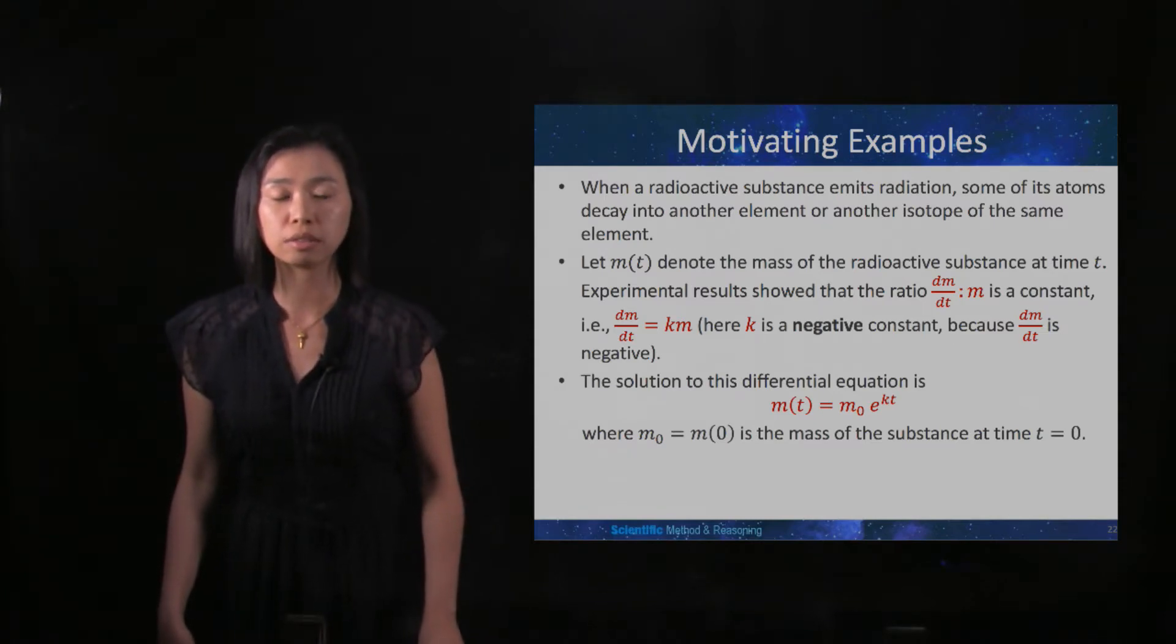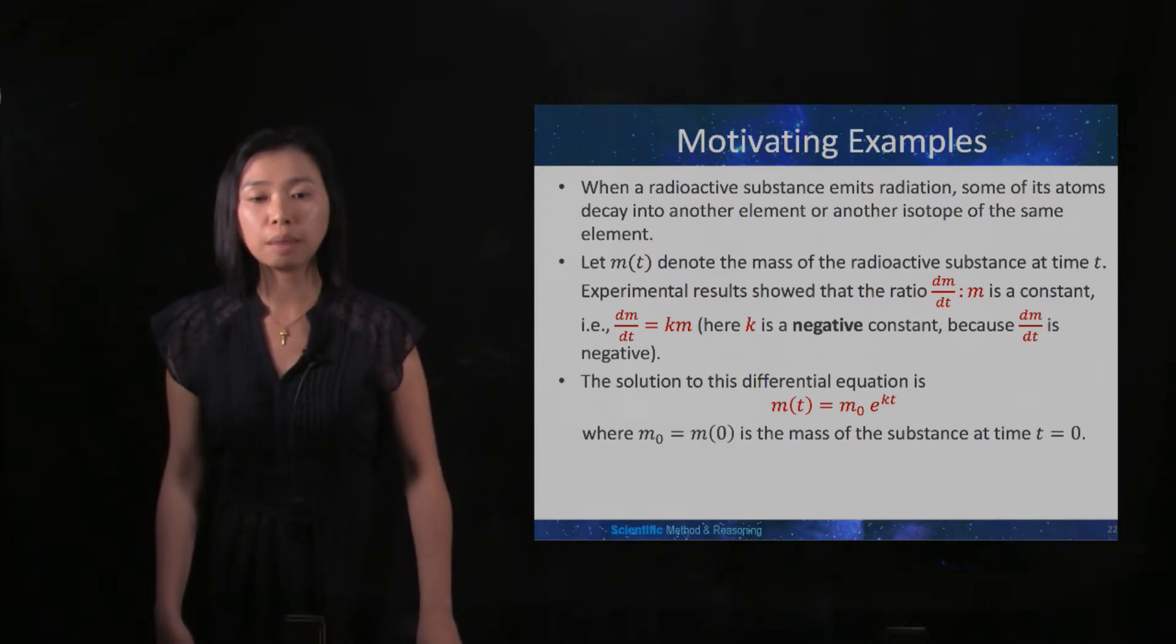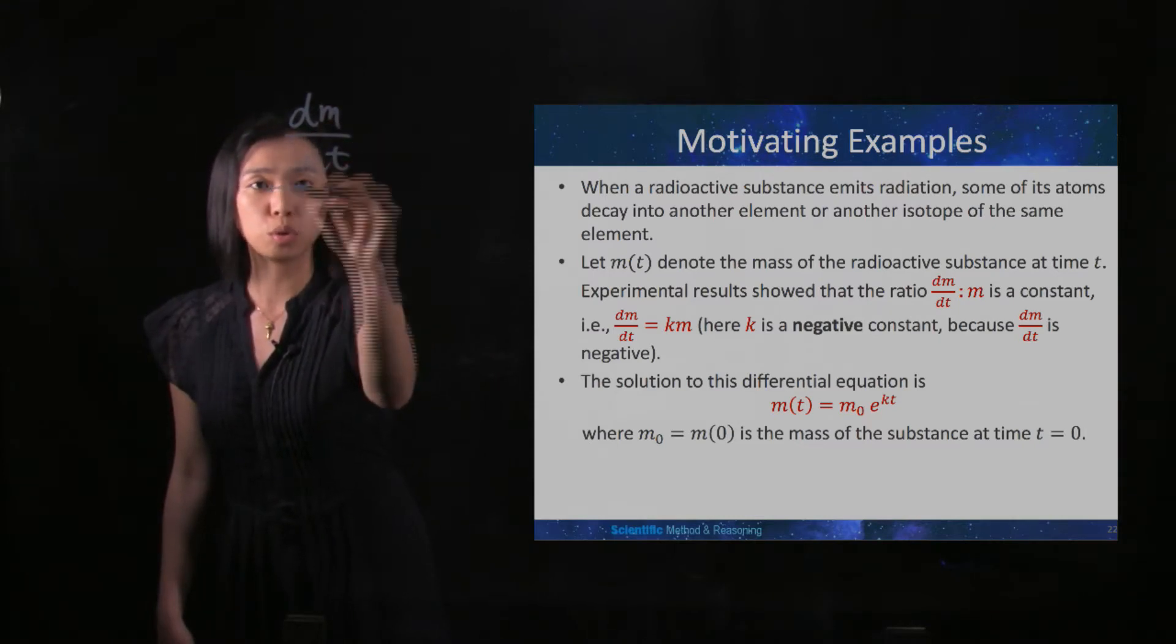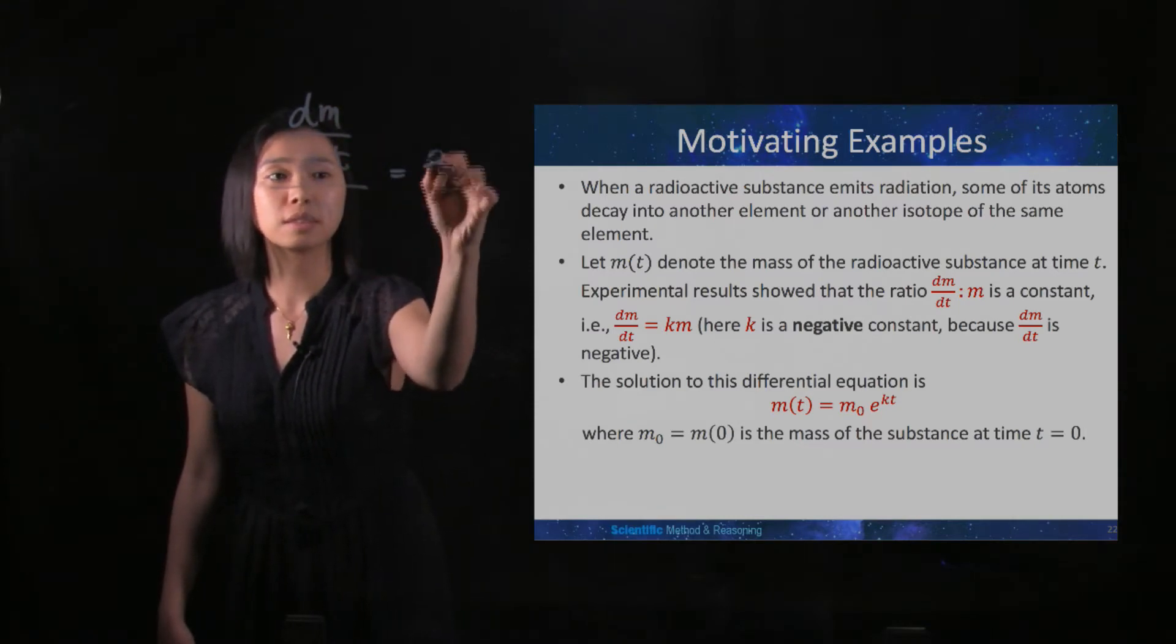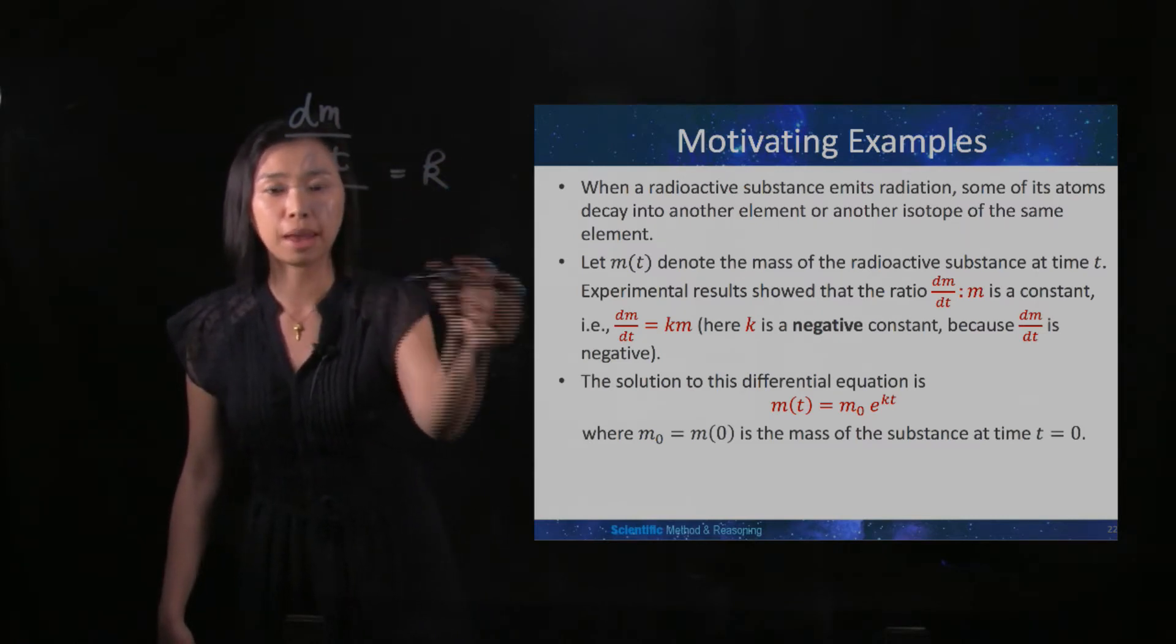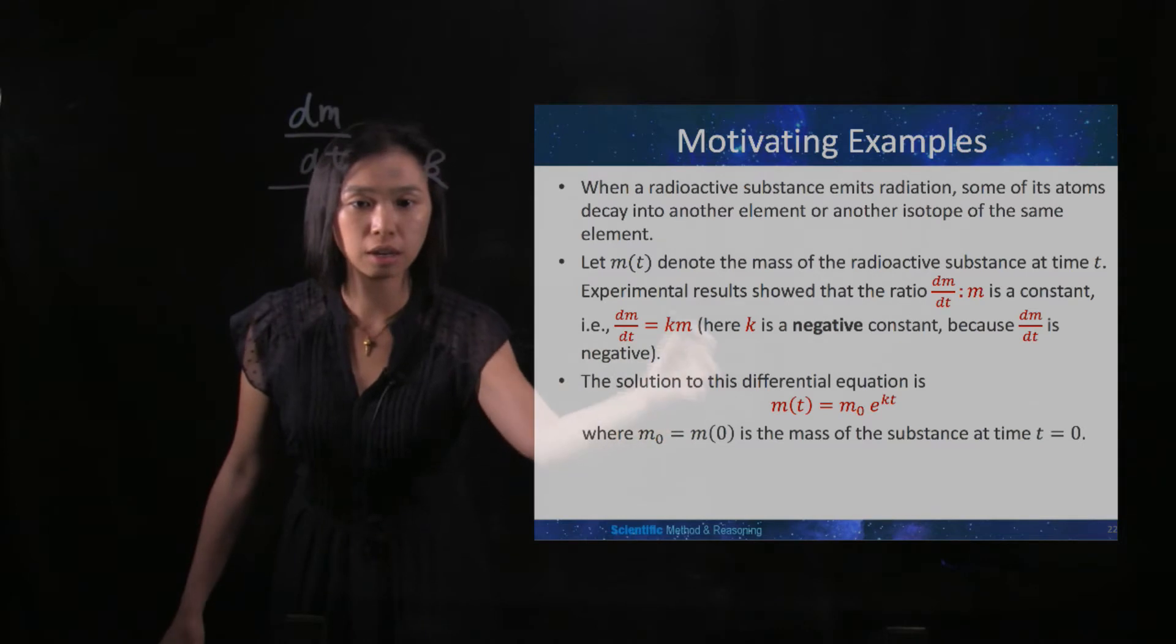Experimental results show that the ratio dm/dt to m is a constant. That means dm/dt is equal to k multiplied by m, which is the result here.